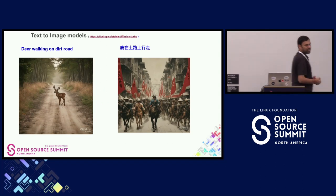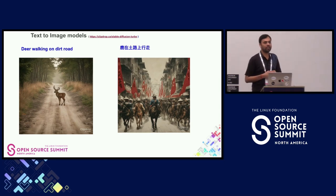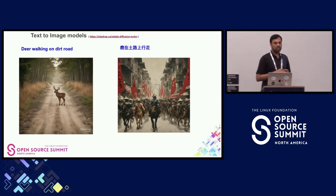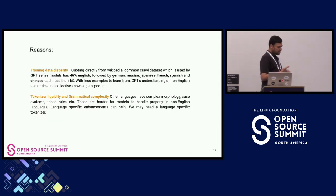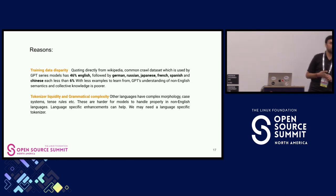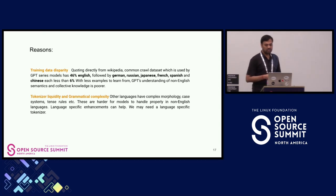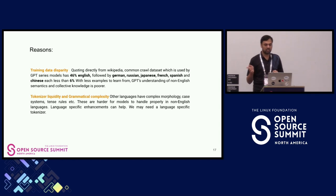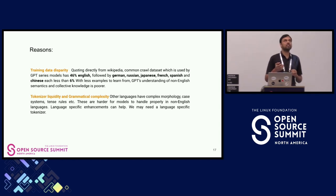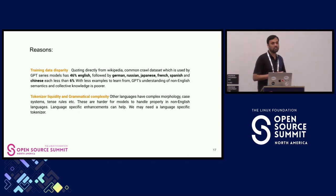What are the reasons for this? More or less, it's training data disparity. From Wikipedia, the Common Crawl dataset used by GPT series models is 46% English, and 6% each for German, Russian, Japanese, French, Spanish, and Chinese — so 46 plus 36 is 82% for those languages combined. That's a major disparity.